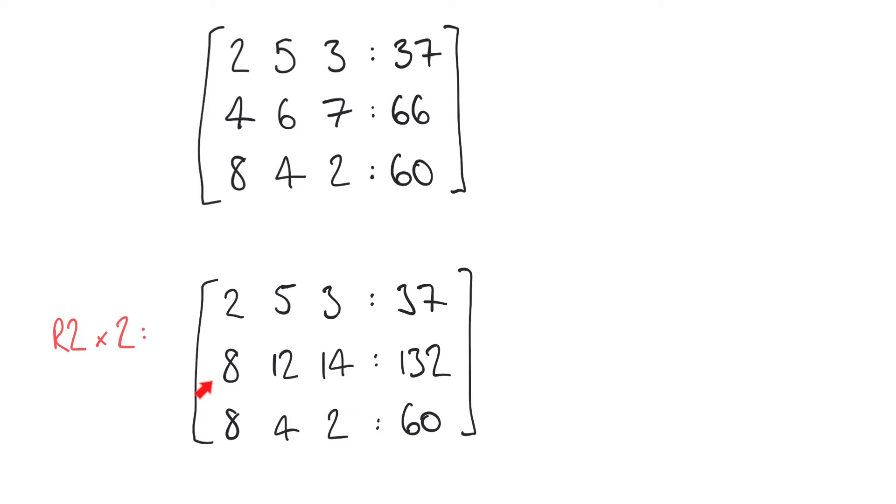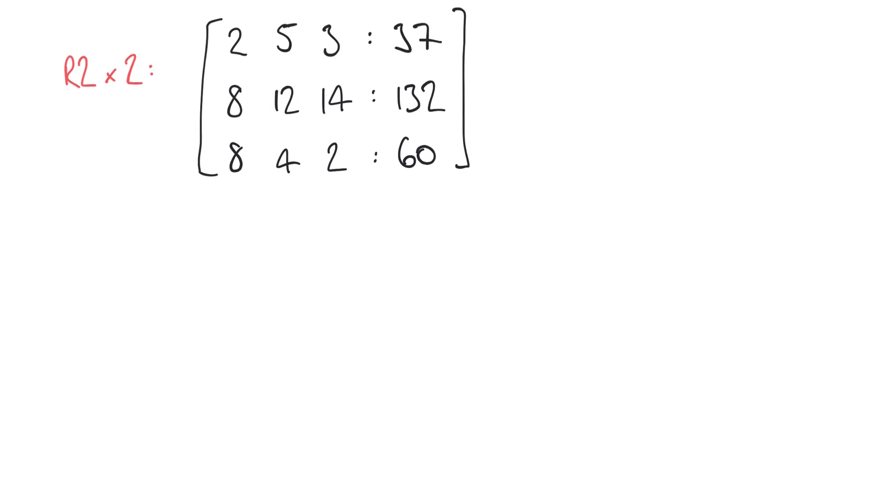Now the reason I've done this is because if you look here we now have the first terms in our second and third row are both 8 and remember we want all of those terms in the bottom left hand corner to be 0 ideally. So what I'm going to do is I'm going to subtract the values from the third row from the values of the second row.